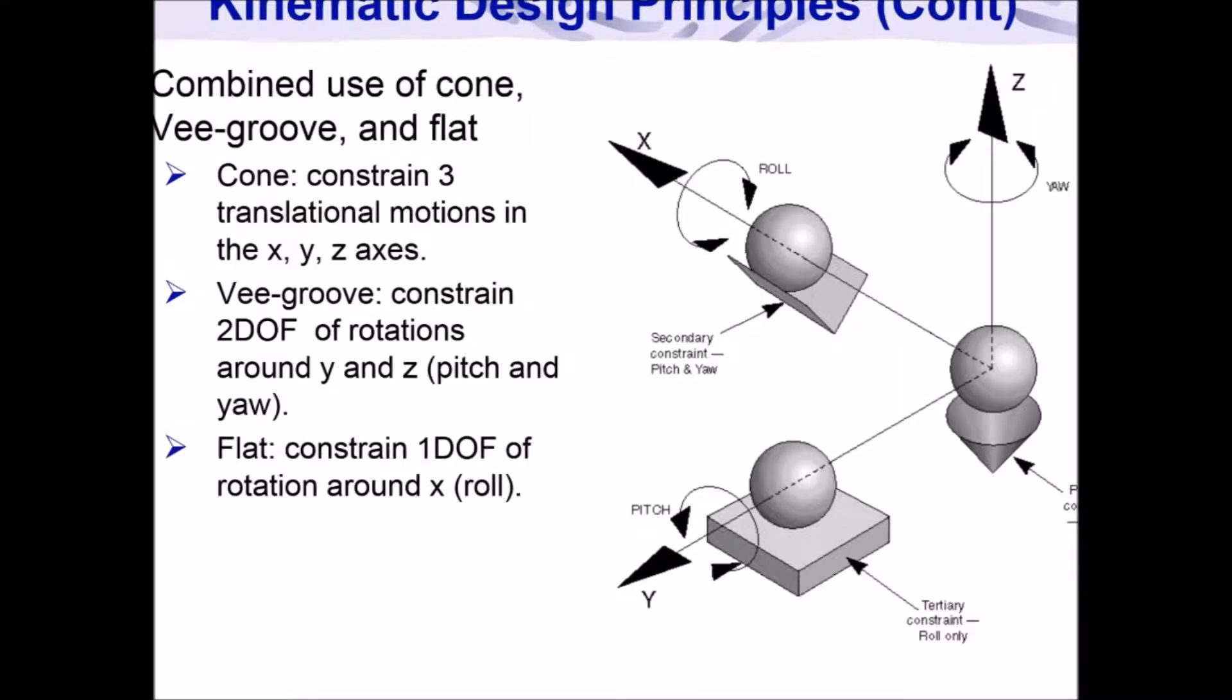Degrees of freedom can be constrained by applying particular contact points, allowing for more specified movement. These principles were implemented in this lab in order to build optical systems and align components within said system.